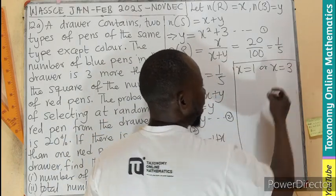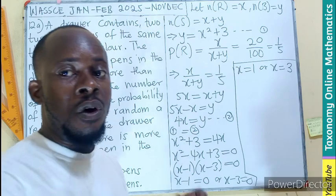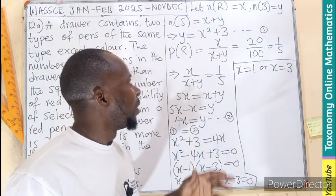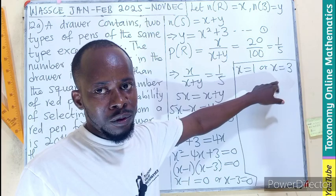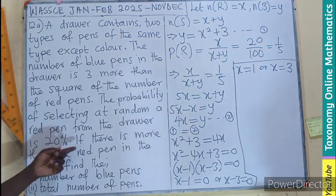So I can pick here to have X equals 1 or X equals 3. When this will also go, I have 3. So we have two values for X. Meaning, the number of red could either be 1 or 3. But we need one of them.